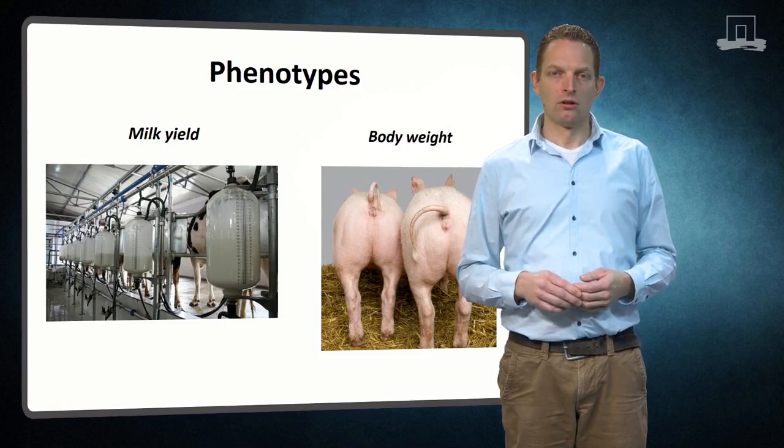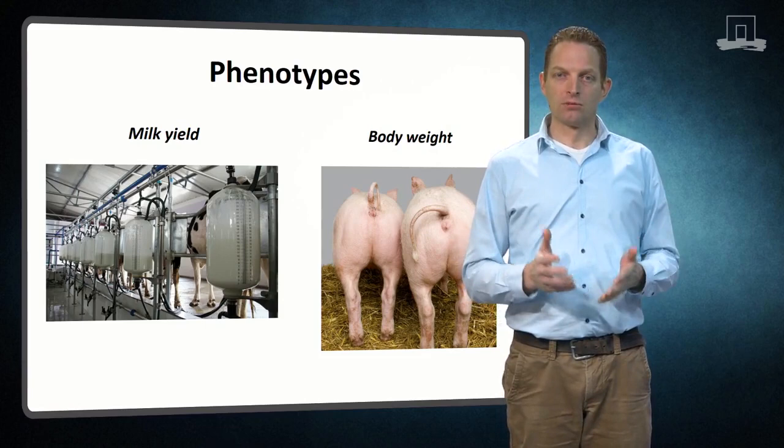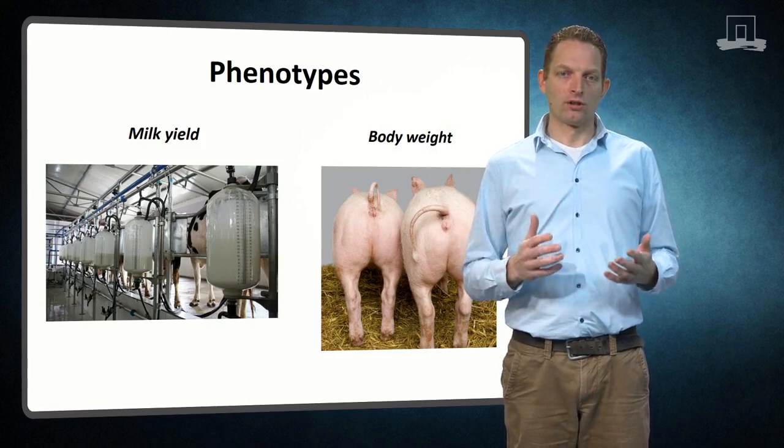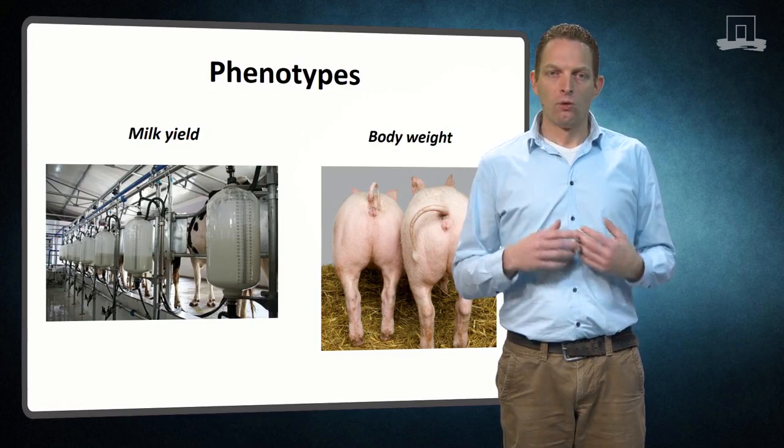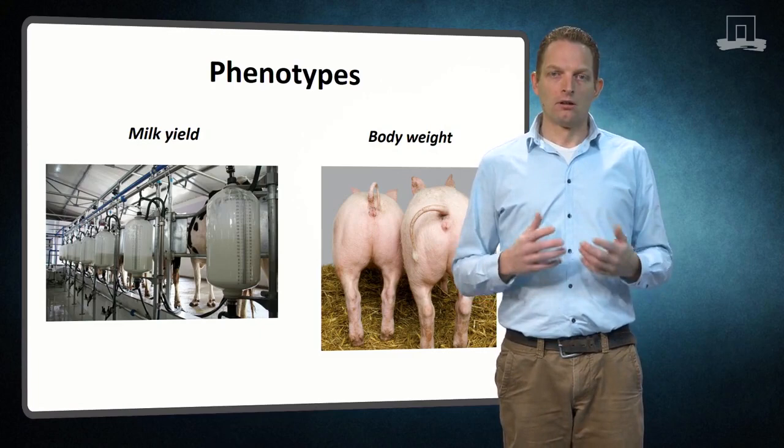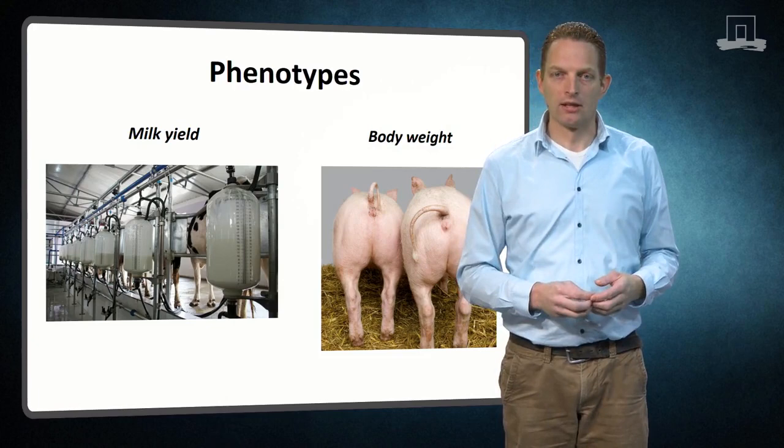For several other traits, phenotypes are not measured on the selection candidates themselves, but on their close relatives. One example are carcass traits in pigs that require that an animal is slaughtered. Once an animal is slaughtered, you cannot use it for breeding purposes anymore. Therefore, carcass traits in pigs are sometimes measured on full sibs of the selection candidates.